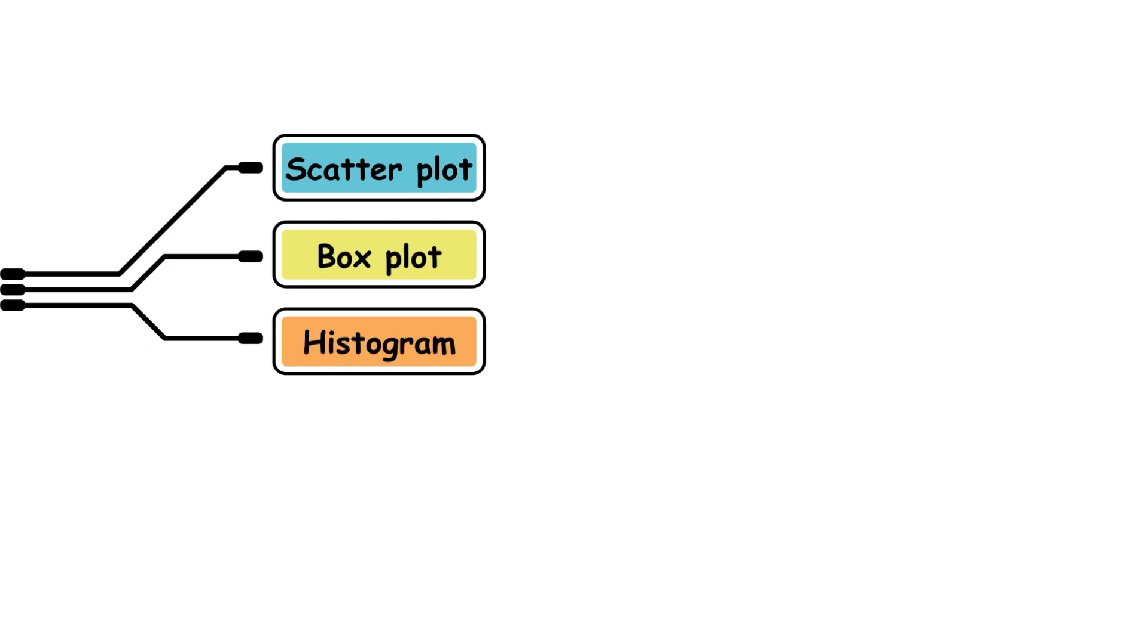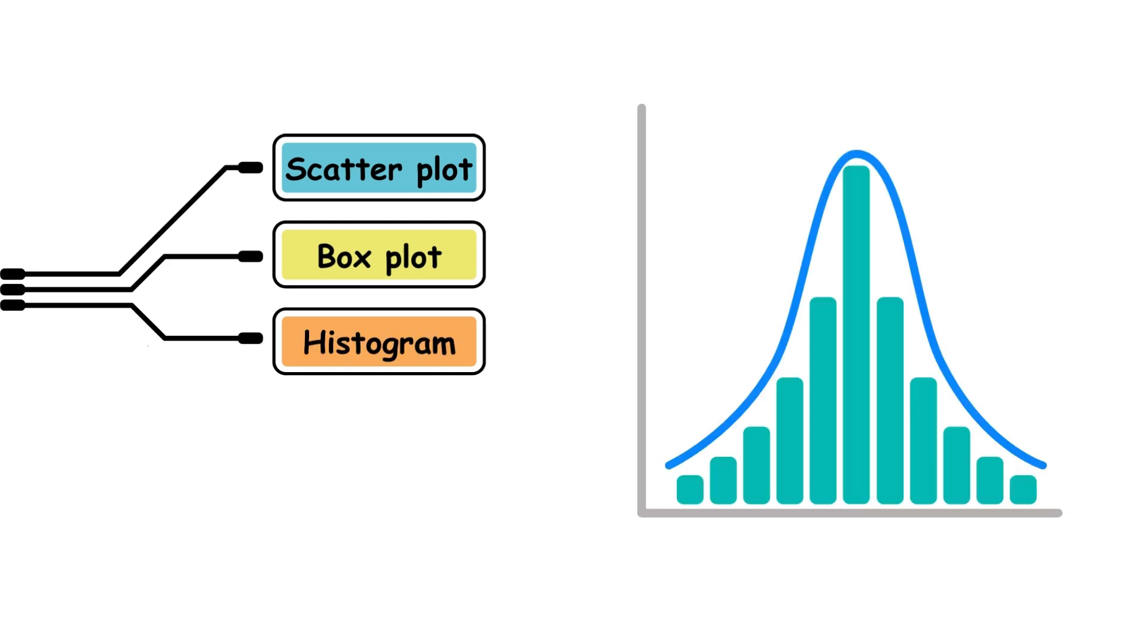3, histogram. Data is split into certain ranges of values, and the number of values within a given range is represented by the height of a vertical bar.